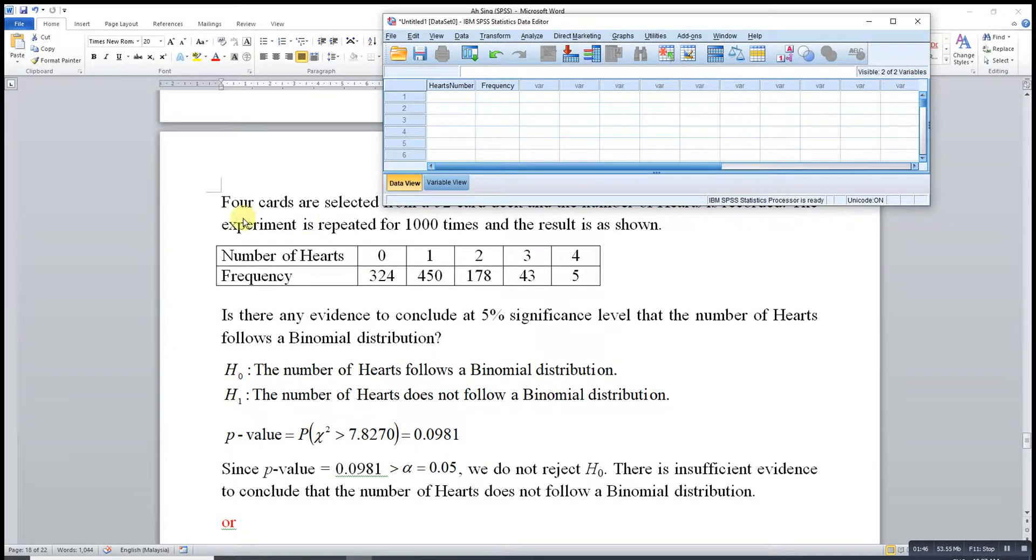Minimum is zero. All together we selected four cards, so the chances can be zero hearts, one heart, two hearts, three hearts, or four hearts. And maximum is four when all of them are hearts.